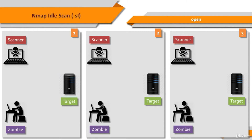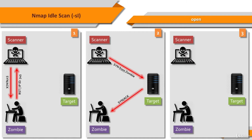Let's see what happens in an IdleScan if the target port is open. The first step is to probe the IPID of the zombie's system. The attacker sends a SYN/ACK to the zombie. Since the zombie does not expect the packet, it sends back a RST with an IPID. The second step is to forge a SYN packet from the zombie to the target system. The target sends a SYN/ACK in response to the SYN that appears to come from the zombie. Since the zombie does not expect the packet, it sends back a RST and increments its IPID in the process.